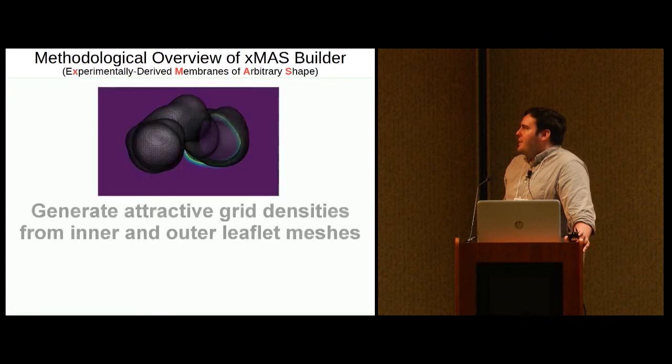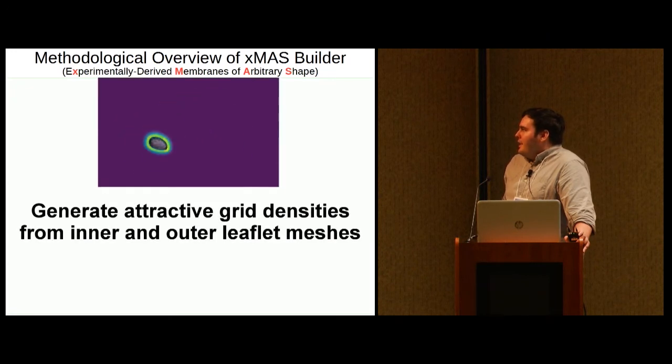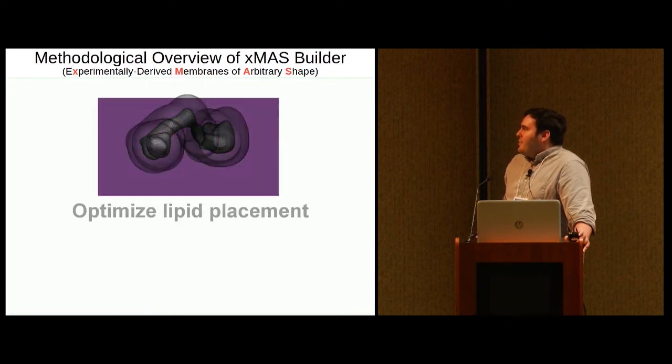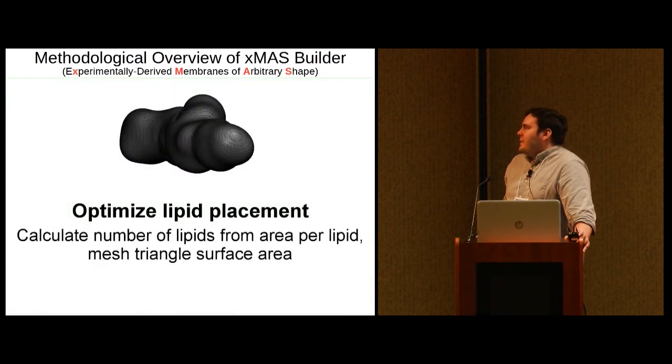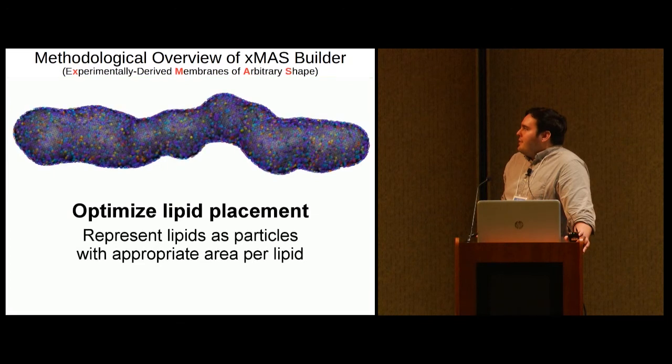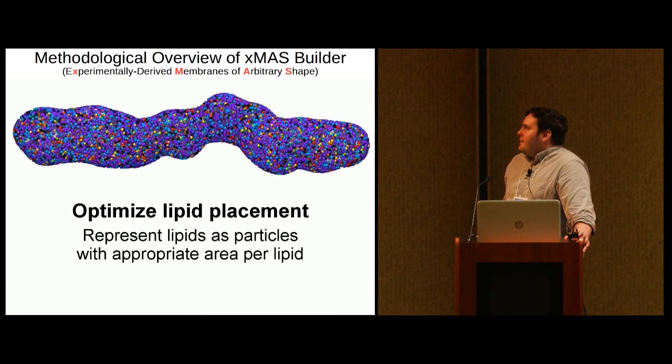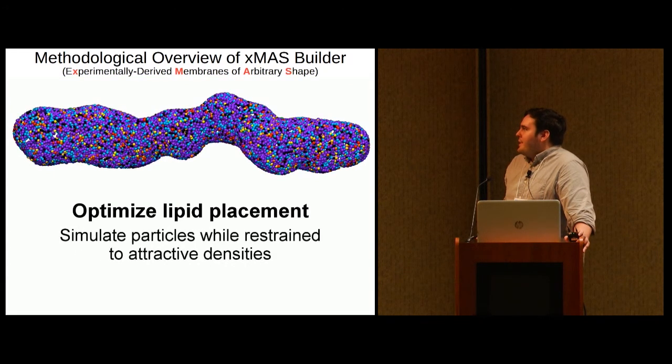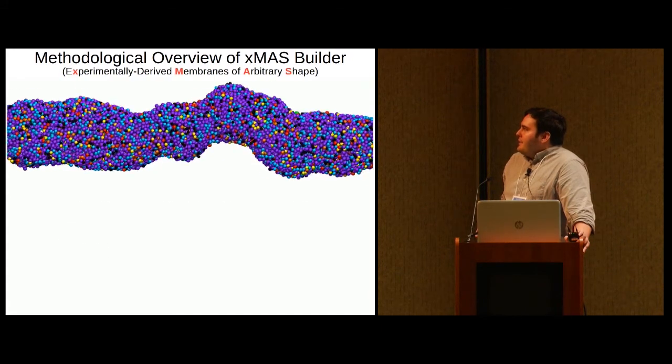These meshes can then be used to generate attractive grid-based potentials, which are then used in the next step to optimize the position, initial placement of the lipids. In this step, lipids are represented as large Leonard-Jones particles and they are simulated using MD while attracted to the grid-based potentials. After this simulation is complete, you need to replace the particles with atomistic lipids.